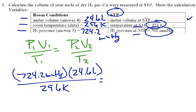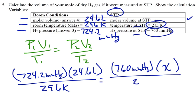Equals, the new pressure, which was 760 millimeters of mercury, times x, that's our volume, divided by the new temperature, 273 Kelvin. So, now what we have to do is solve for x. I'm going to pause and do my calculation.